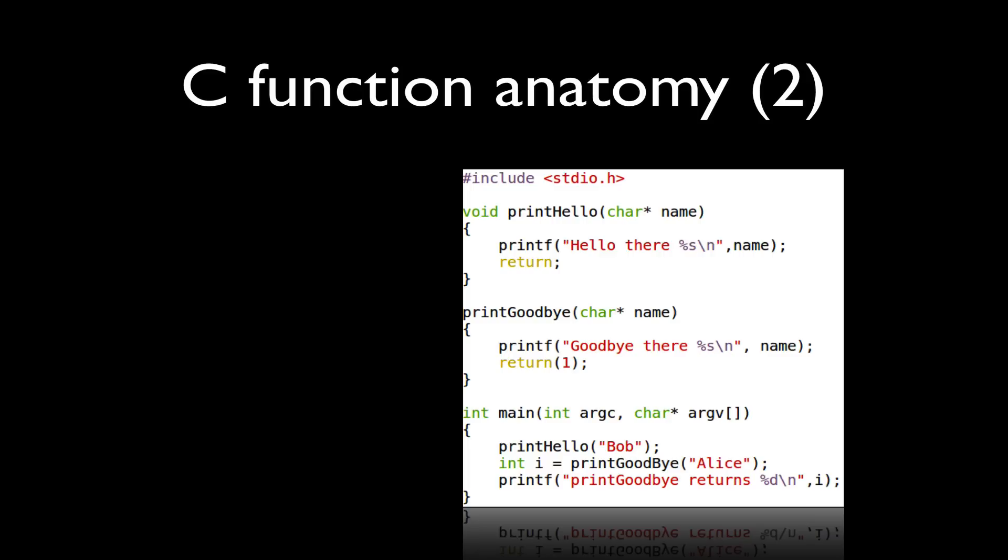We can use the keyword void to indicate that a function has no return value. In this case, we can use the return statement without any value after it, so just the keyword return with a semicolon.